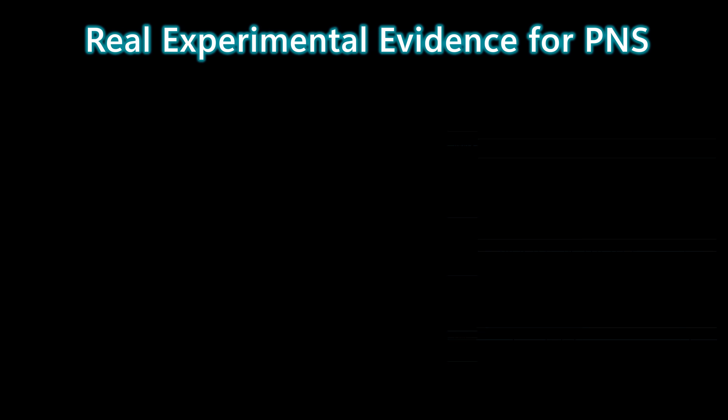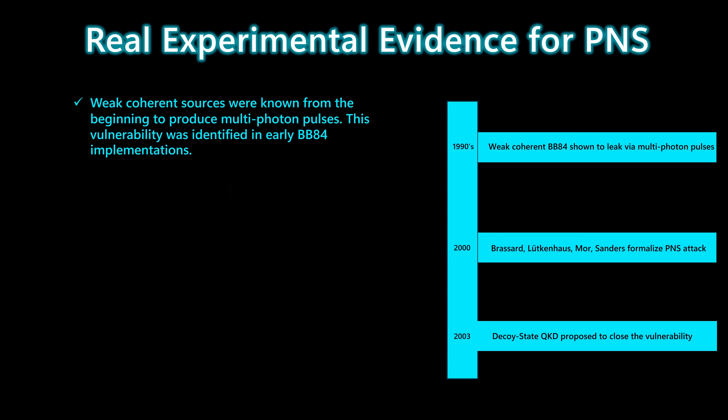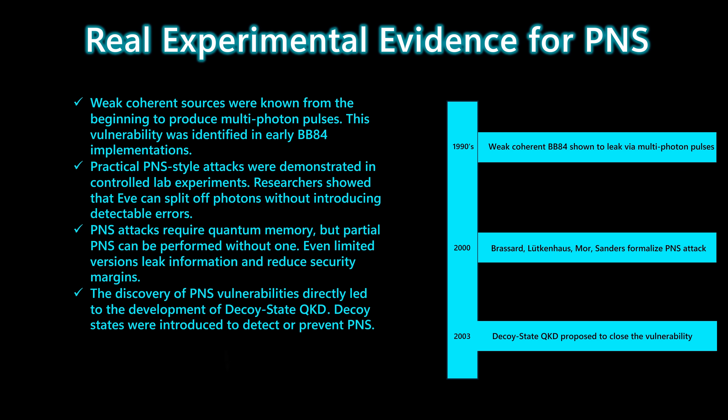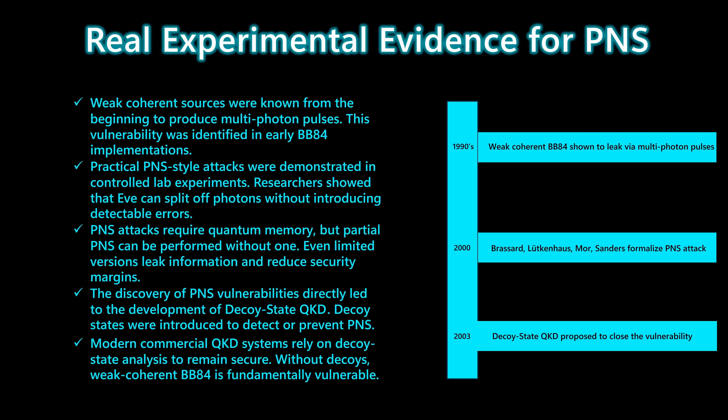Weak coherent laser sources have been known from the very beginning to produce multi-photon pulses, and this vulnerability was identified in early BB84 implementations. As QKD systems became more practical, researchers began demonstrating PNS-style attacks in controlled laboratory settings. These experiments showed that Eve could split off photons from multi-photon pulses without introducing detectable errors. A full photon number splitting attack requires quantum memory, but even partial PNS can be performed without one. Limited versions of the attack still leak information and reduce the security margin of weak coherent BB84.